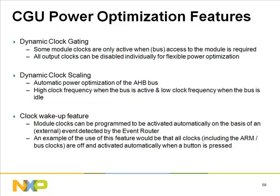Power Management — Dynamic Clock Gating: some module clocks are only active when bus access to the module is required, and all module clocks can be disabled individually for flexible power optimization. Using the SYS_base clock, dynamic clock scaling allows automatic power optimization of the AHB bus — high clock frequency when the bus is active and low clock frequency when idle. The clock wake-up feature allows module clocks to be activated automatically based on an external event detected by the event router, for example waking up all clocks when a button is pressed.